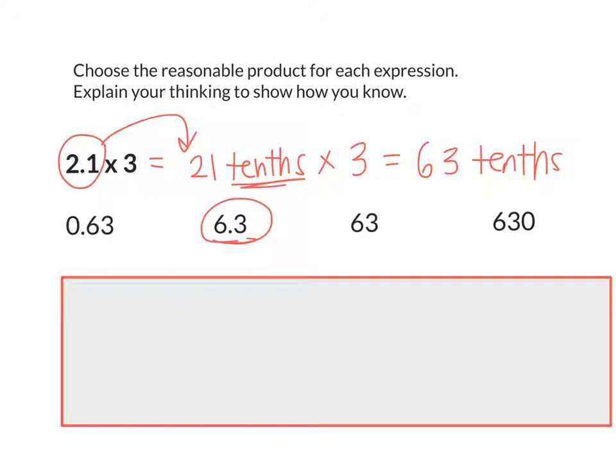A lot of times we might do correct multiplication. We might do 21 times 3 is 63, and then we forget about the place value. You see how if you didn't know the place values, you might have written one of those other answers as being correct? Let's talk about what's reasonable. Two point one is pretty close to what whole number? Two. So what's two times three? Six. That means our answer should be pretty close to six. So if I forgot my place value and I didn't write tenths, and I end up with the answer 63, is that reasonable? That's why you can use estimation and what you know about place value to help you make sure your answer is correct.